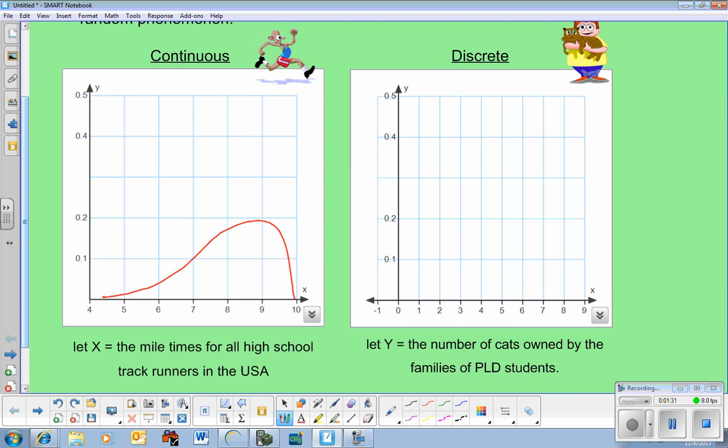And we've talked a whole lot about normal curves. We're going to be worrying about discrete random variables. These are going to be histograms as far as graphing it. This is the number of cats owned by all families PLD students. So whereas how long it takes you to run a mile could be any value, you know, we probably round that to the nearest second or tenth of a second, depending on how accurate our stopwatch is. But cats come in whole numbers.